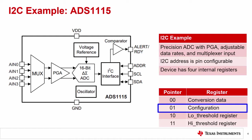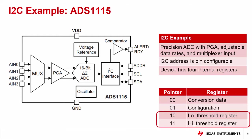The configuration register sets the programmable gain amplifier, the input channel, the data rate, and other modes of operation for the device. Later, we'll cover this register in depth, showing how to write to this register and configure the device. The last two registers are the low threshold register and the high threshold register. These two registers are used to set thresholds for a digital comparator in the device.